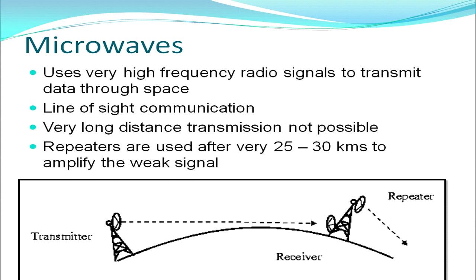Next we move to microwaves — an unwired or unguided transmission medium, unlike the physical wires of twisted pair and coaxial cable. Here, very high frequency radio signals are used to transmit data through space. This is a line-of-sight communication, meaning the transmitter and repeater must be in direct line of sight with no hindrance. Because of the curvature of the earth, very long-distance transmission is not possible with microwaves.